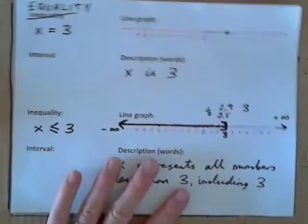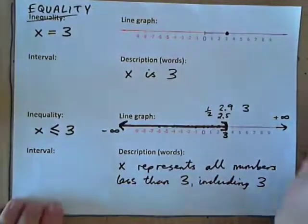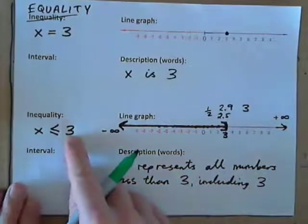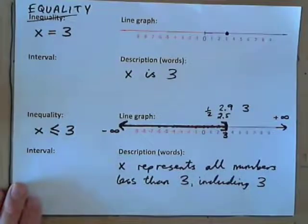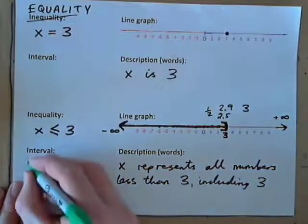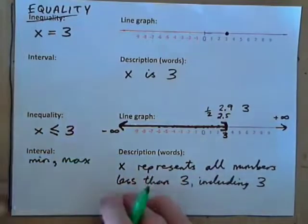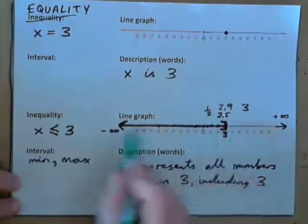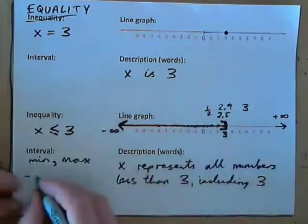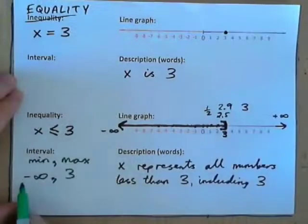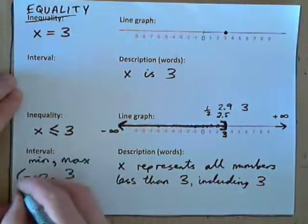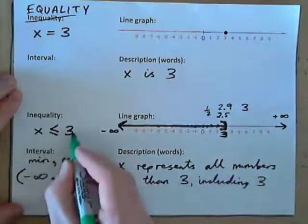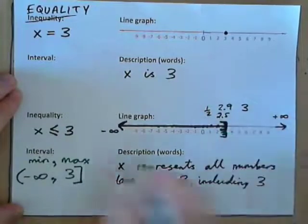Let's have a look at our first example and see if you can get the interval. x is less than or equal to 3. Well, always write down: min, comma, max. We've got numbers from negative infinity to positive 3. The minimum is negative infinity, the maximum is positive 3. Can we include negative infinity? No — put parenthesis. Is 3 included in the set? It's less than or equal to 3, so yes it is. Just like on the line graph, you've got the bracket.